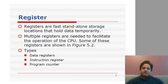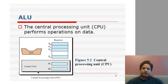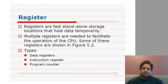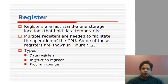Registers are fast standalone storage locations that hold data temporarily on which you may want to perform operations inside the CPU. Multiple registers are needed to facilitate CPU operation. Data registers are normally referred to as R0, R1, up to Rn. The Instruction Register holds the current instruction being executed, and the Program Counter points to the next memory location from which to bring the next instruction.